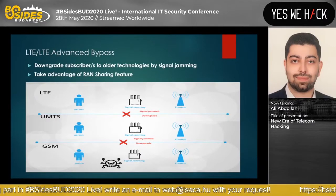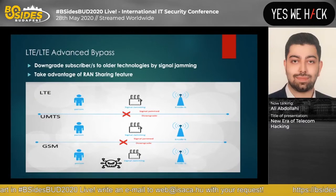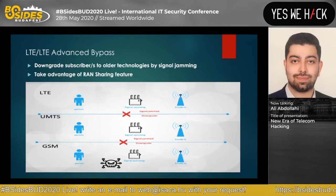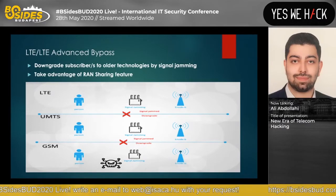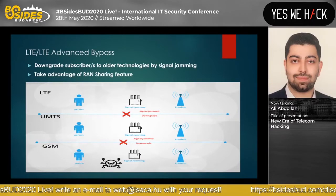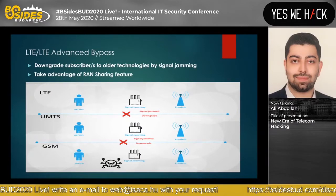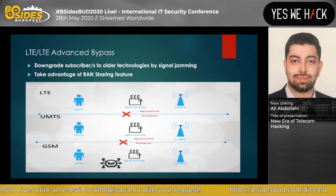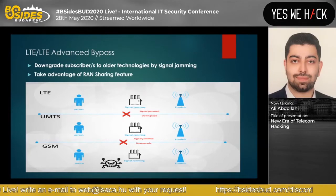Let's review the bypassing method here. There is a general way: downgrading subscribers to traditional technologies like 3G and 2G, which are vulnerable. To perform this downgrading we need to use a signal jammer.